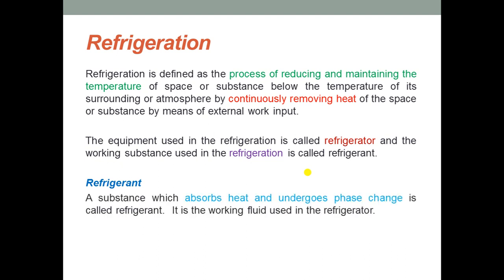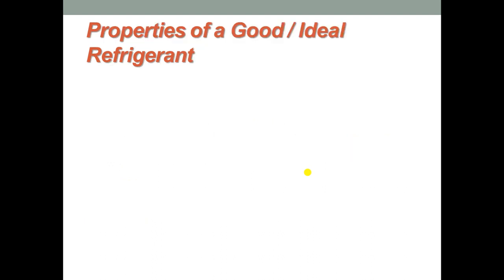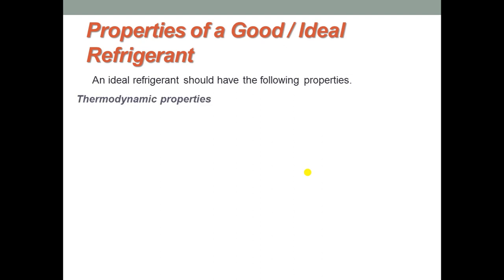A refrigerant is a substance which absorbs heat and undergoes phase change. It is the working fluid used in the refrigerator. We will now discuss some of the important properties of a good or ideal refrigerant. These can be identified under categories: thermodynamic properties, chemical properties, physical properties, and other types of properties.